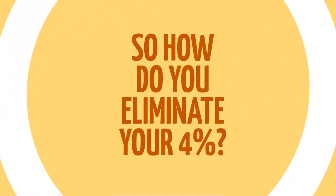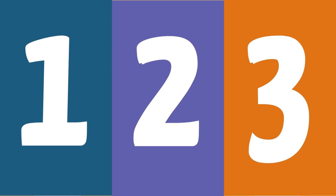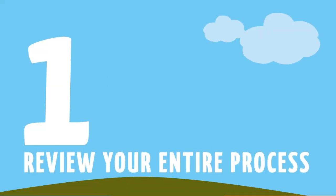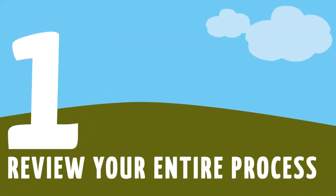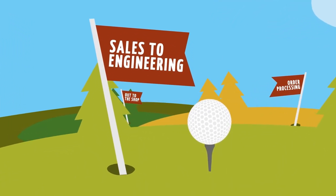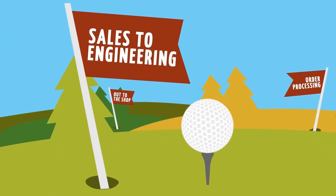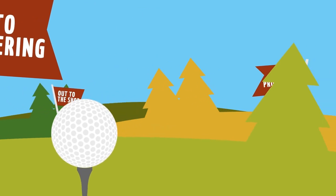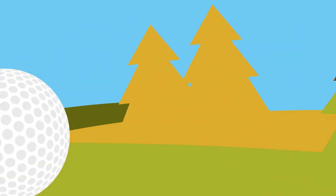So how do you eliminate your 4%? Here is an easy 3-step process. Number 1: Review your entire process. If you want to make meaningful changes, you need to measure and evaluate all the steps in the entire process, from sales to engineering, to order processing, and out to the shop.